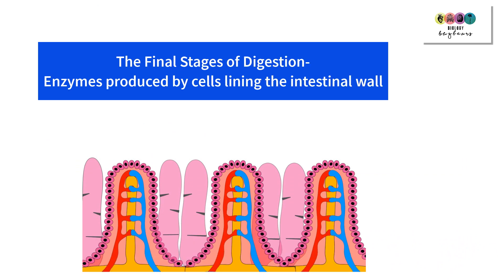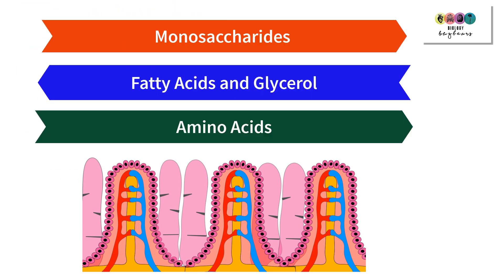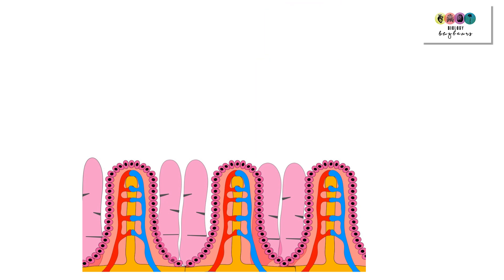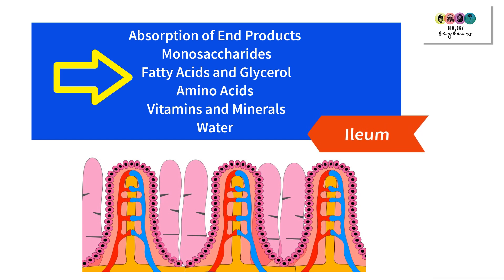The final stages of digestion take place in the upper portion of the small intestine and are completed by enzymes produced by cells lining the intestinal wall. At the end of digestion, carbohydrates are now monosaccharides, lipids are fatty acids and glycerol, and proteins are amino acids. These are the products of digestion, along with vitamins, minerals, and water.